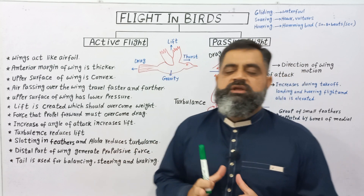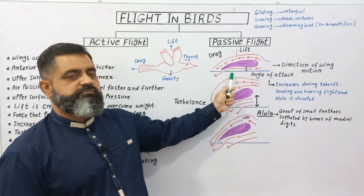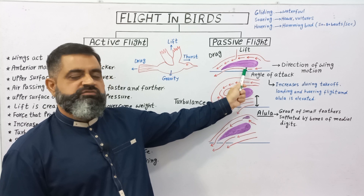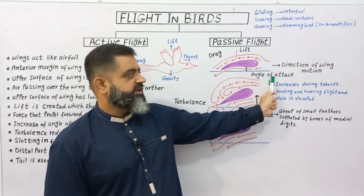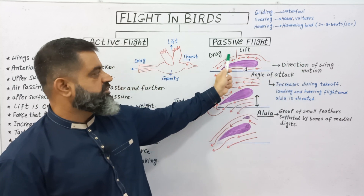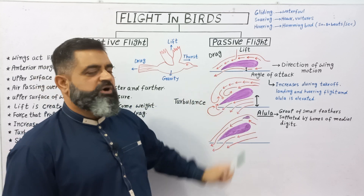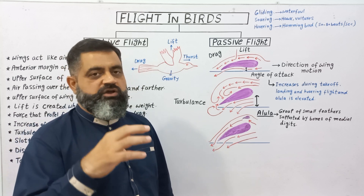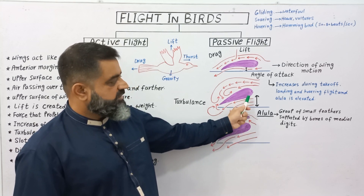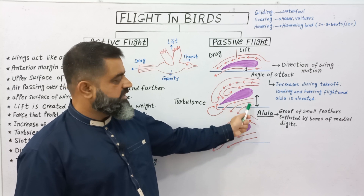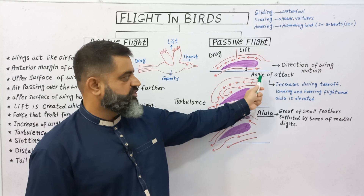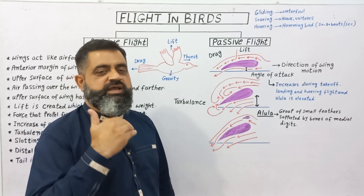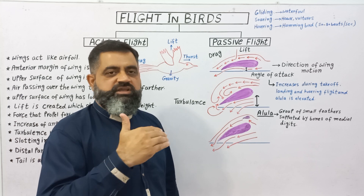Now we are going to talk about angle of attack. Looking at this diagram, this is a wing and this line is the body of the bird. There is a very small angle between the wing and the body, known as the angle of attack. This is the direction of wing motion, and air passes over and under the wing. When birds want to take off or hover, they increase the angle of attack, meaning the distance of the wing from the body increases. When the angle of attack increases, there is more lift and more thrust, which helps birds to fly against gravity and move in the forward direction.